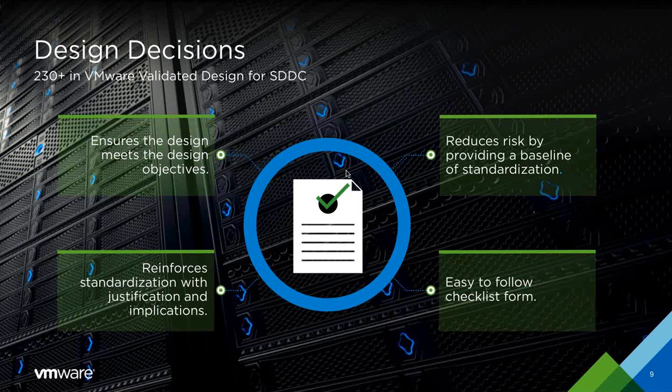Moving from design objectives to design decisions: they have over 230 design decisions in VVD 3.0. These document every aspect of how the design was built and standardized, helping answer questions like: what was the design decision, what was the justification, and what are the implications on other subsystems, on people, or on time? These are available as a checklist that can be downloaded from the community website.